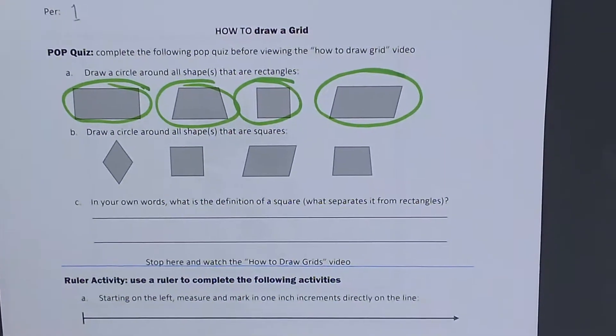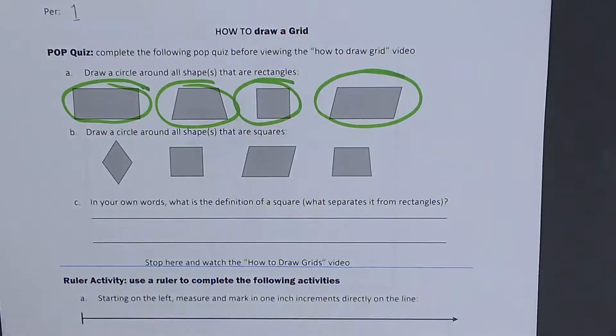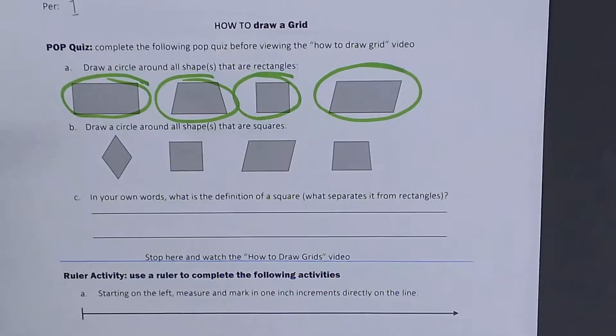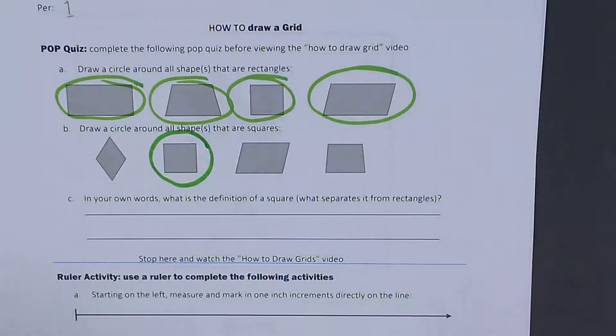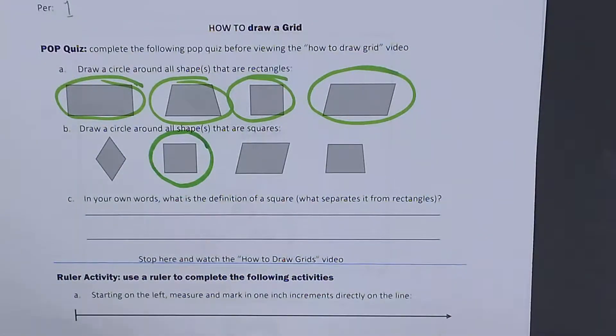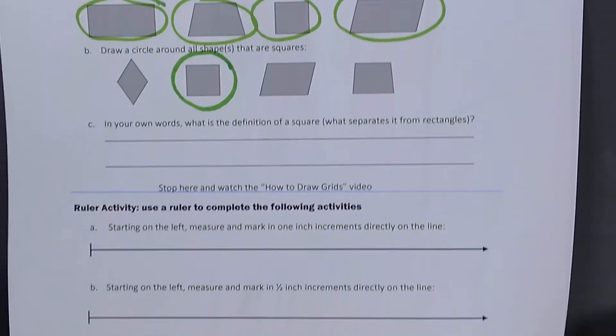Next one says draw a circle around all the shapes that are squares. You have to think way back to elementary again. I know that squares have four sides, but what are other attributes of squares? Well, this one for sure looks like a square, so you should have circled this one. I have students that have circled others, but we'll get back to that in just a minute after we define squares in our own words.